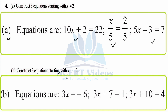Part b: Construct three equations starting with x equals minus 2. First: 3 times x equals minus 6 — so 3x equals minus 6. Check: minus 2 times 3 is minus 6. Second: 3x plus 7 equals 1. Check: 3 times minus 2 is minus 6, plus 7 is 1. Third: 2x plus 10 equals 6. Check: 2 times minus 2 is minus 4, plus 10 is 4. In this way you can construct any number of equations.